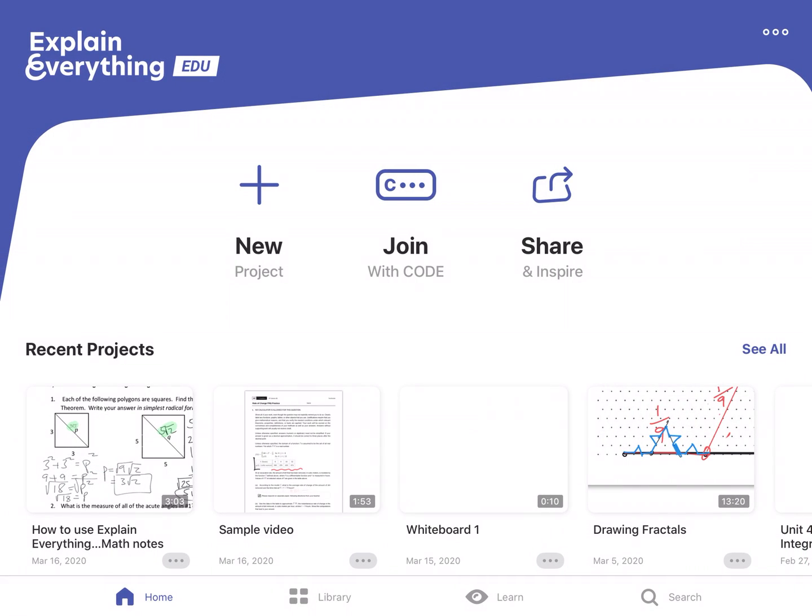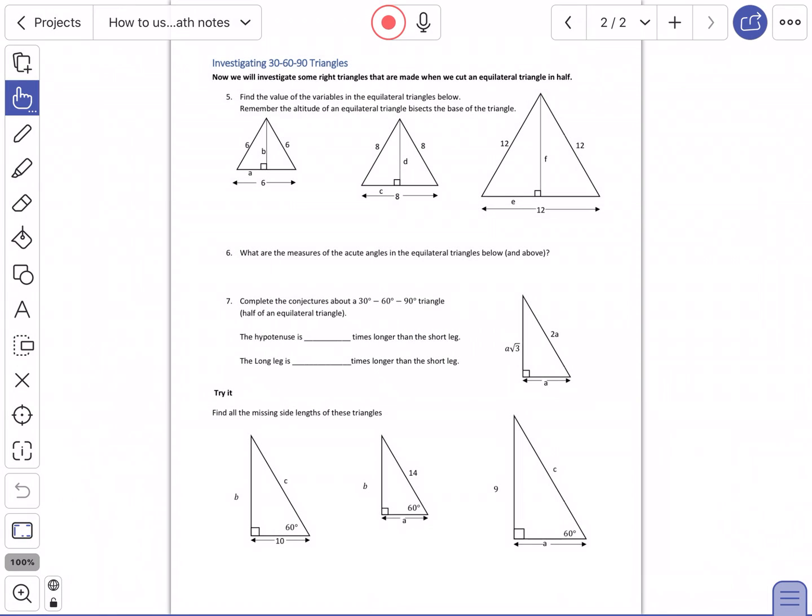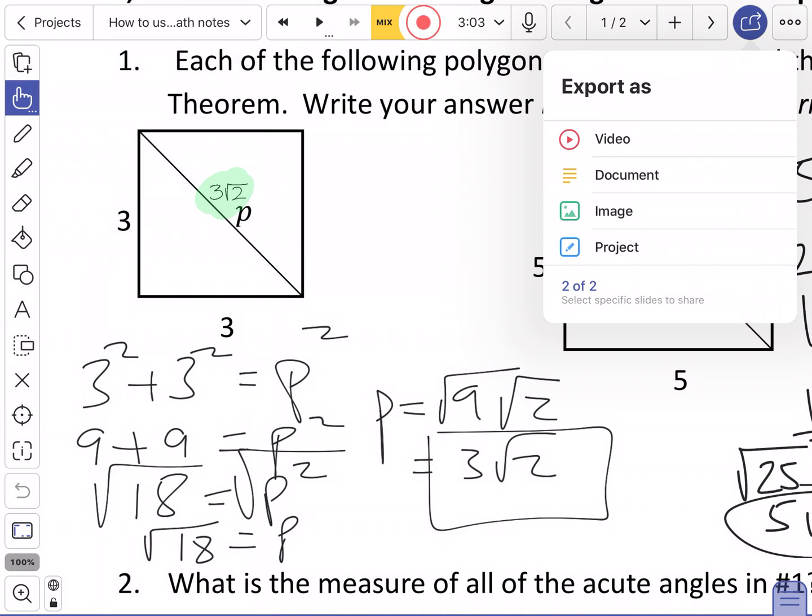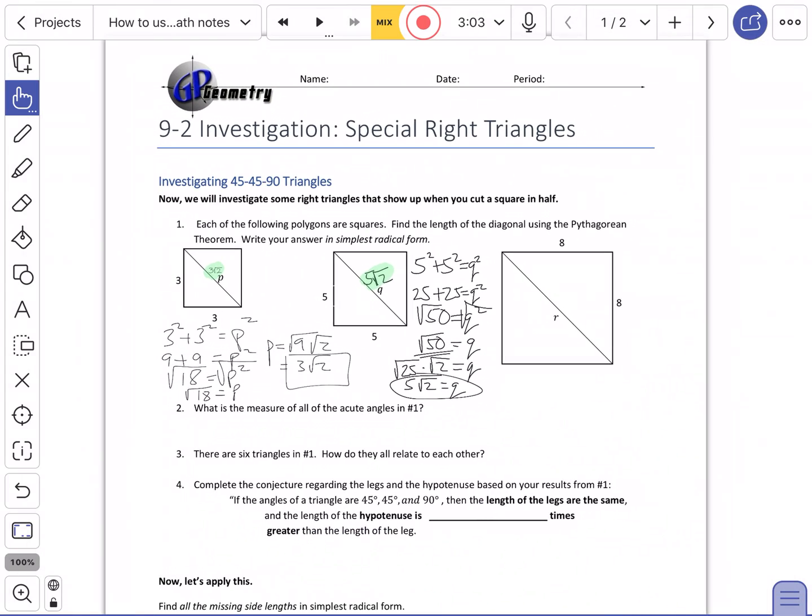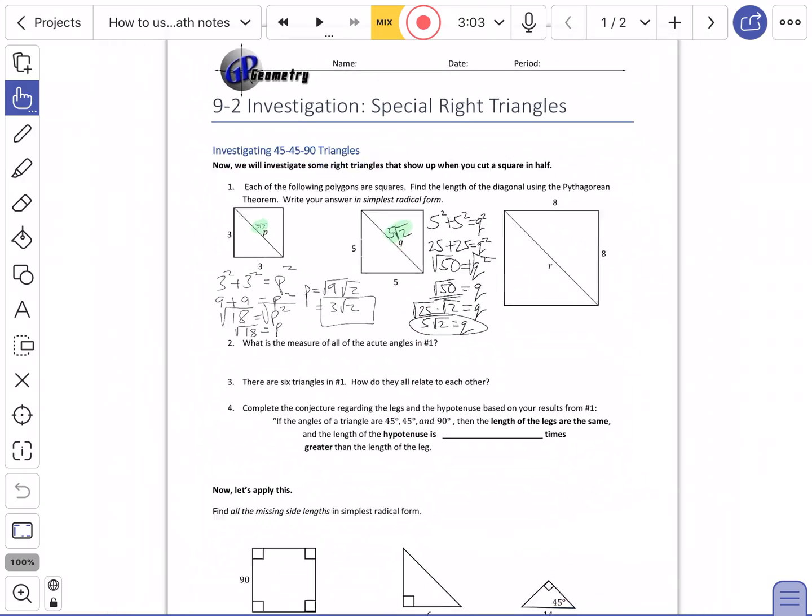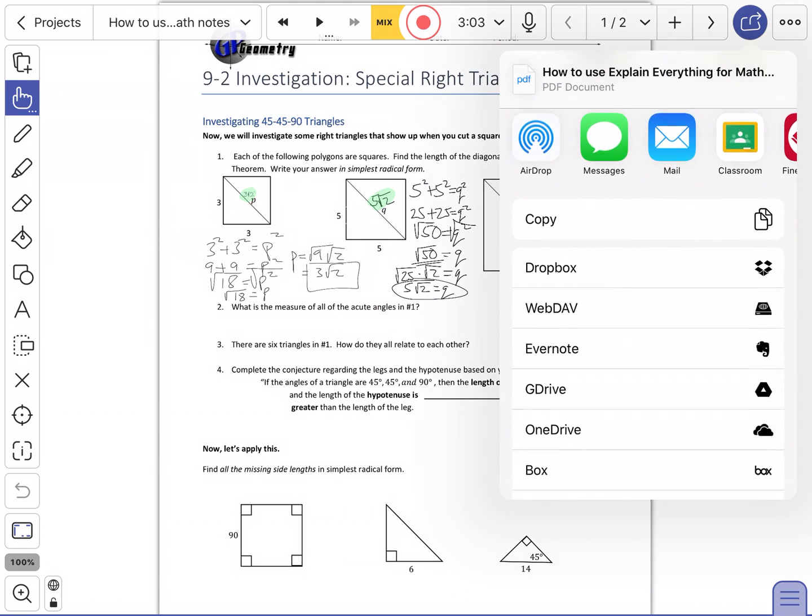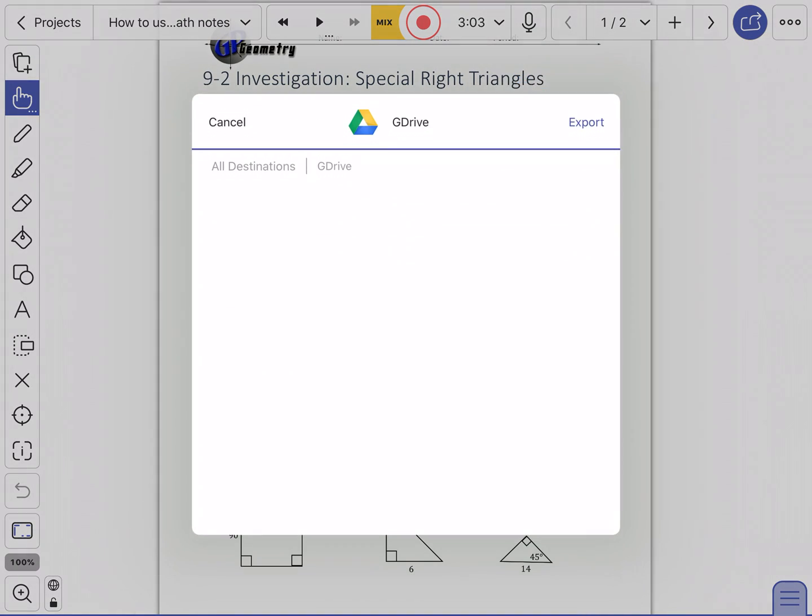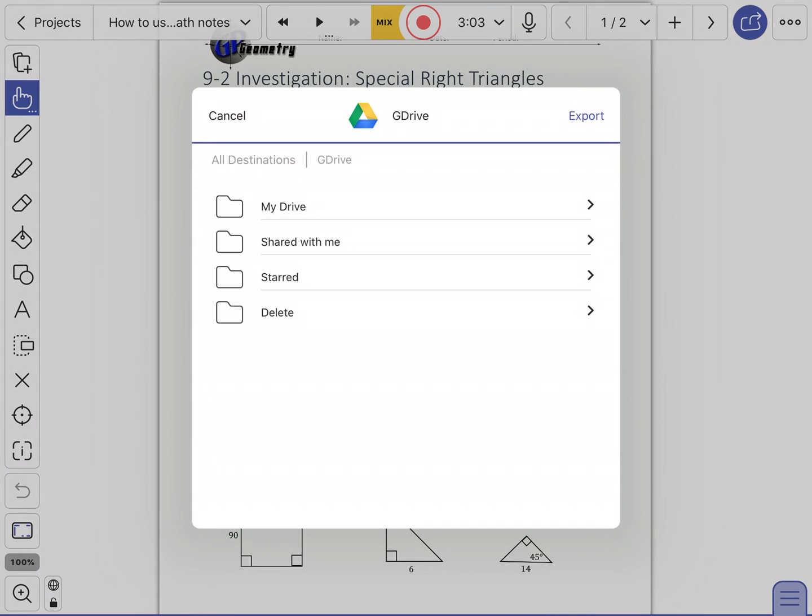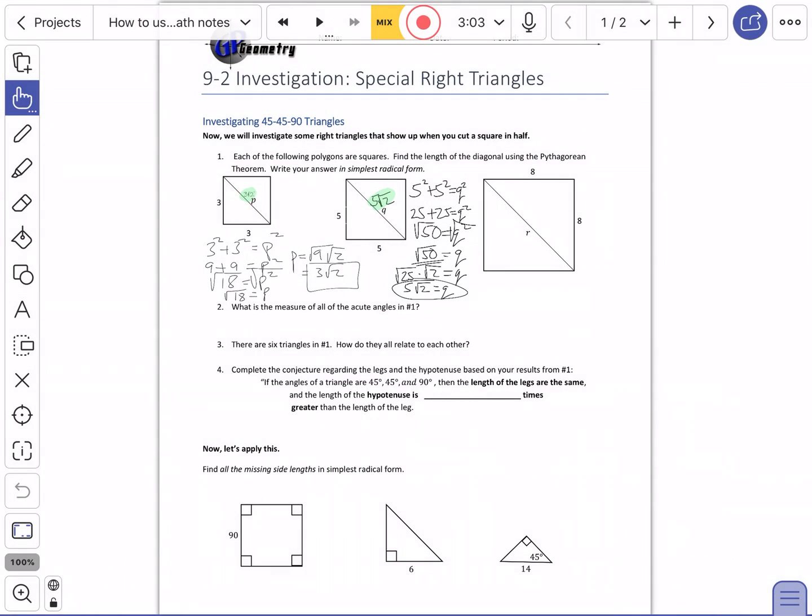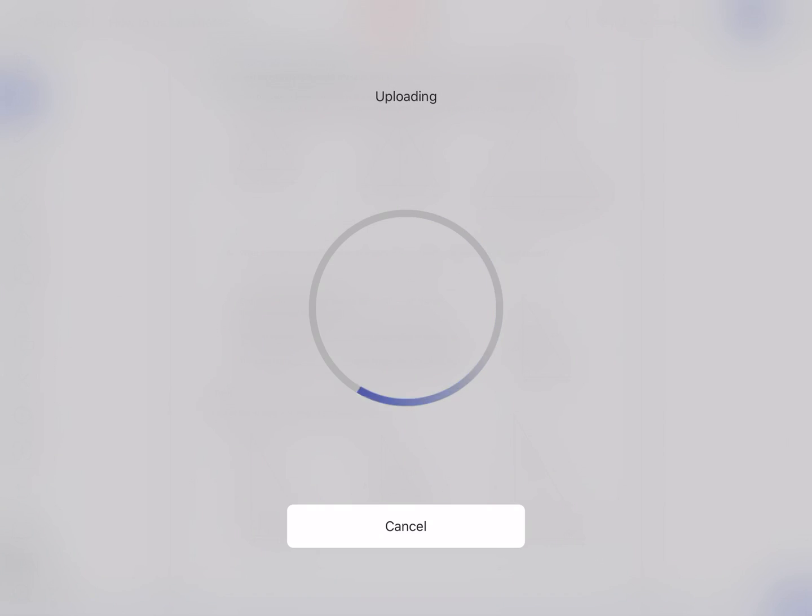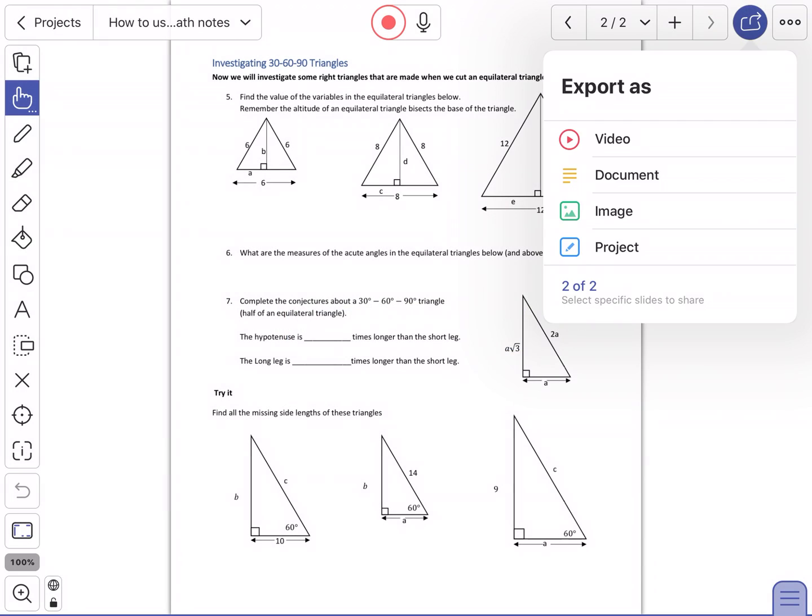And now I need to export this. Now when you're exporting this, you can do a couple things. I like to sometimes export this as a PDF. So if you go export as a document, then that'll make a PDF version of what you have and you can save it to your Dropbox or wherever, Google Drive there. There it is, we'll send that over there. So that just makes a PDF that's kind of nice so you can give it to kids.